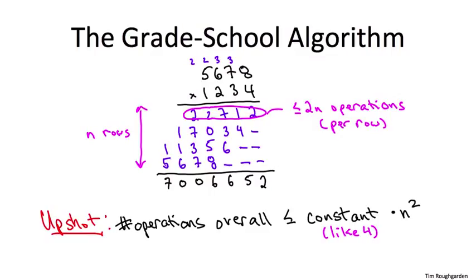Now, depending on what type of third grader you were, you might well have accepted this procedure as the unique or at least the optimal way of multiplying two numbers together. If you want to be a serious algorithm designer, that kind of obedient timidity is a quality you're going to have to grow out of.